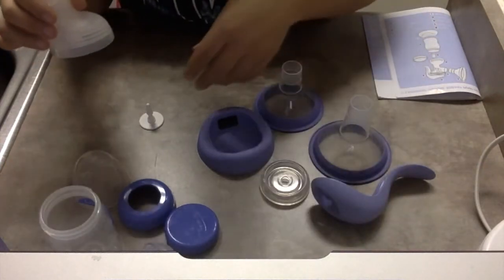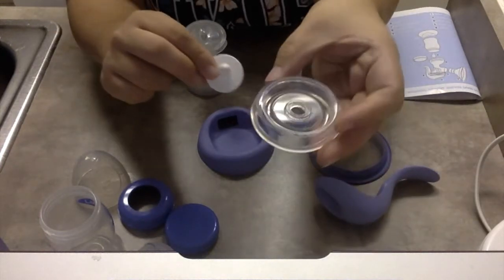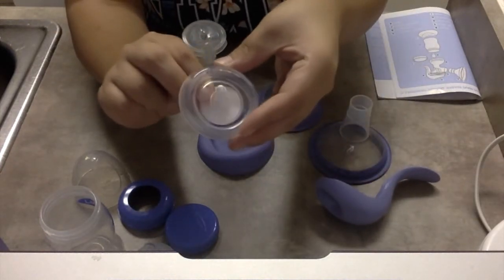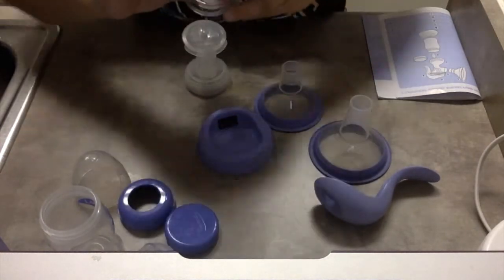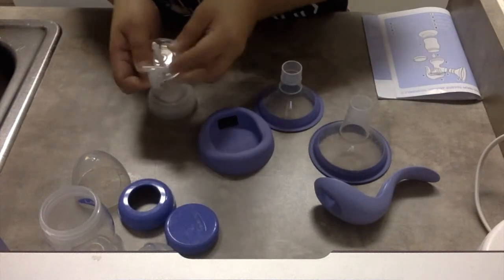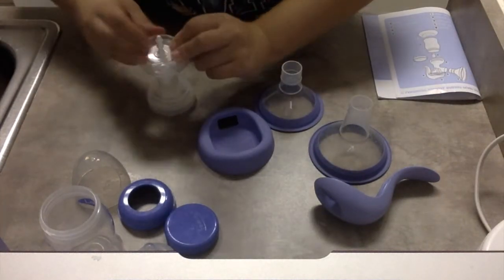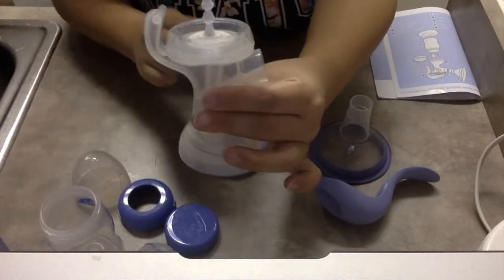And then you're going to take your stem and your silicone diaphragm. There's a hole in the middle. You're going to stick this up just like this, and you're going to stick it on top of the flange body. So there you go. You want to make sure it's a nice tight fit on there.